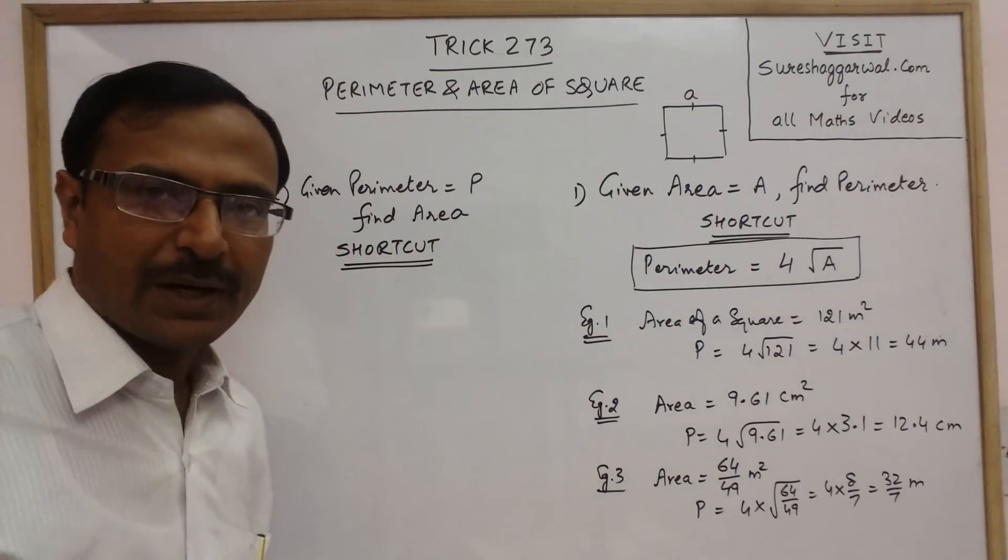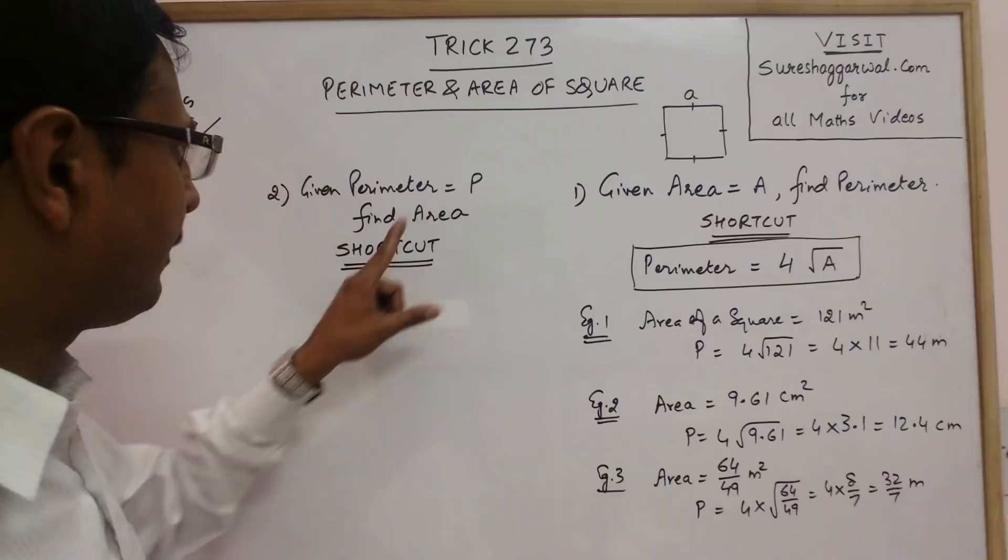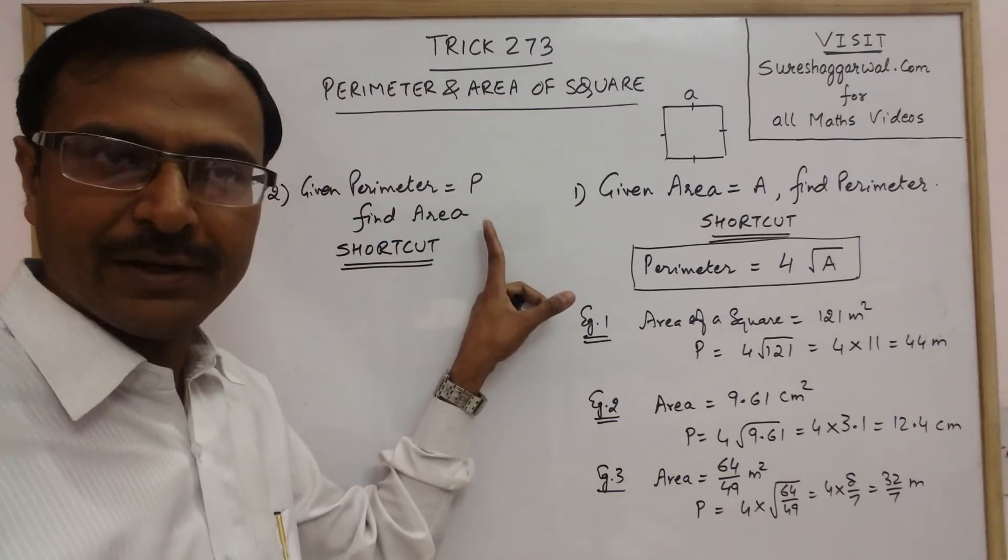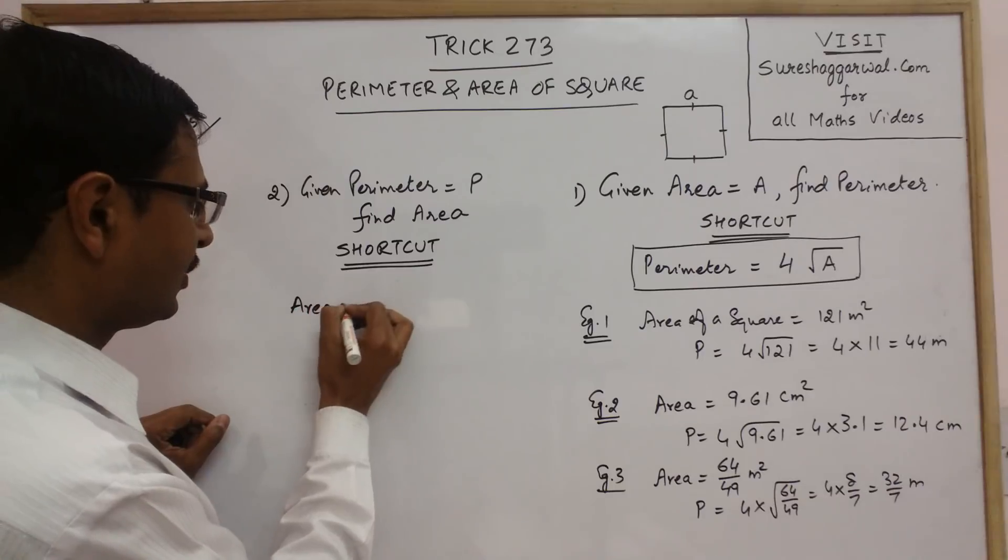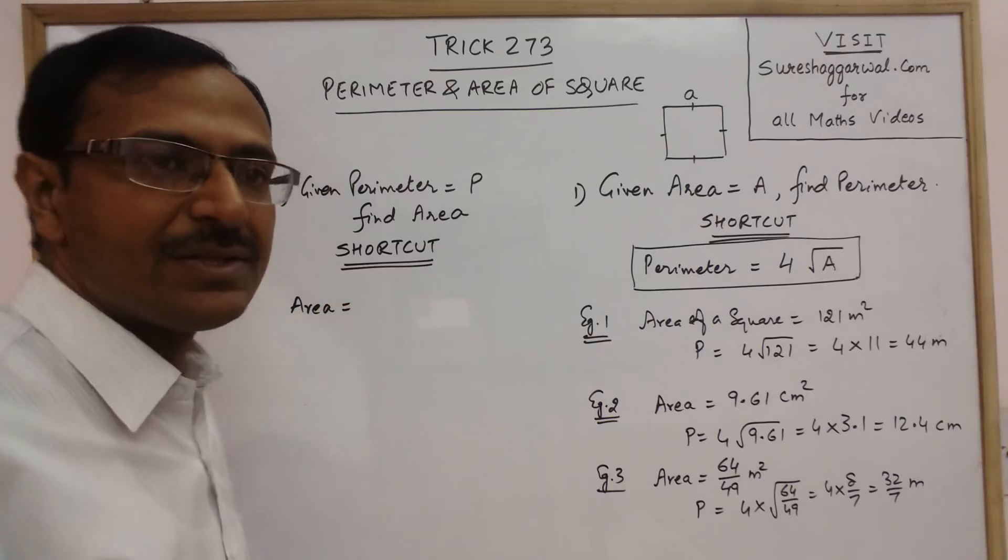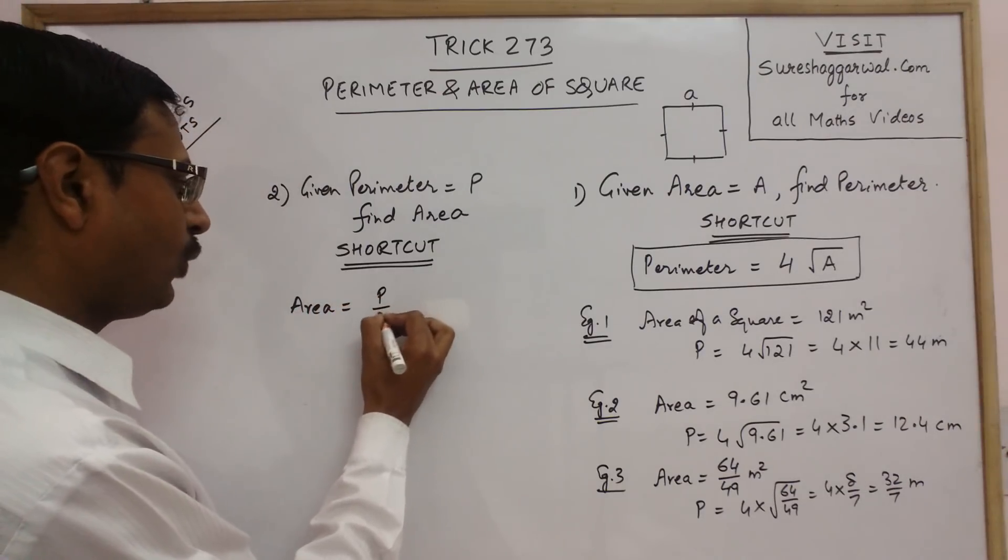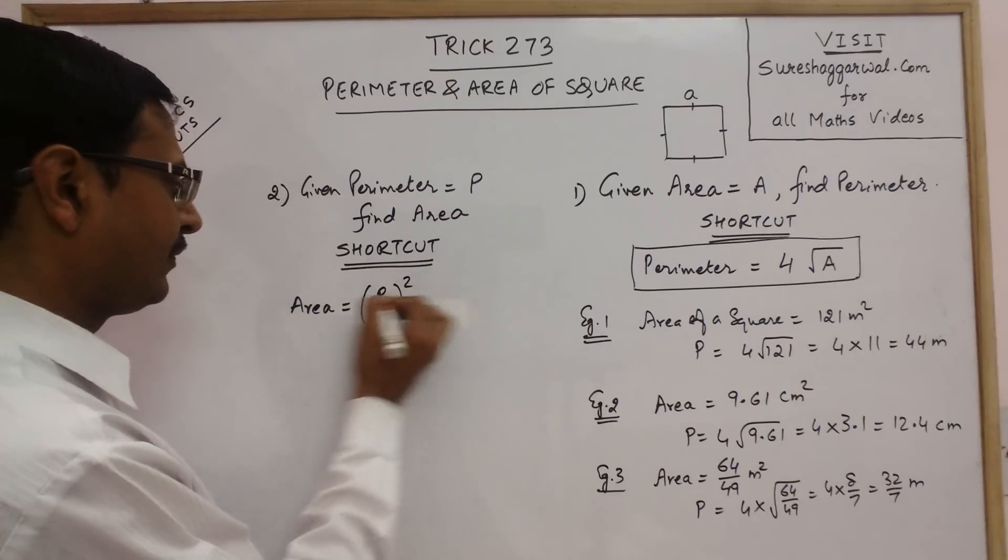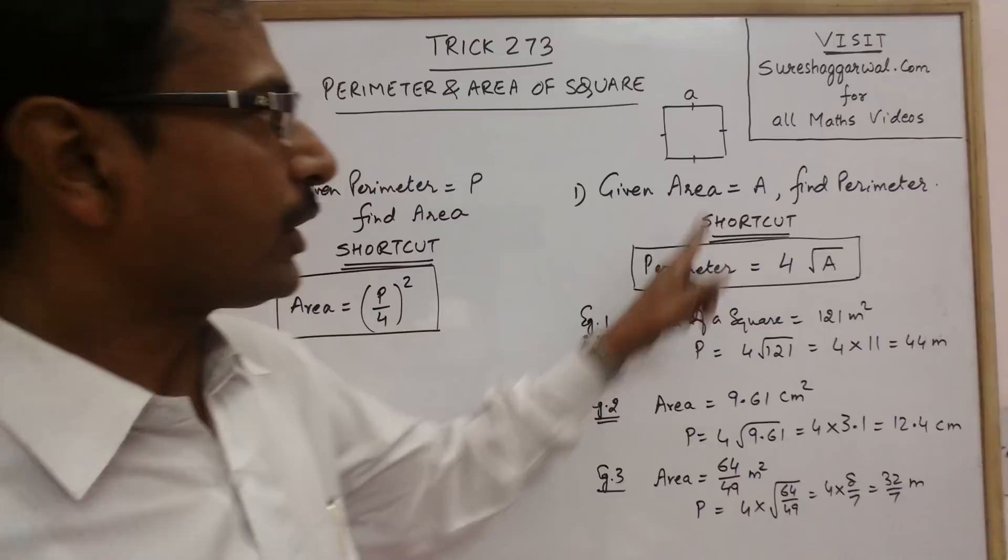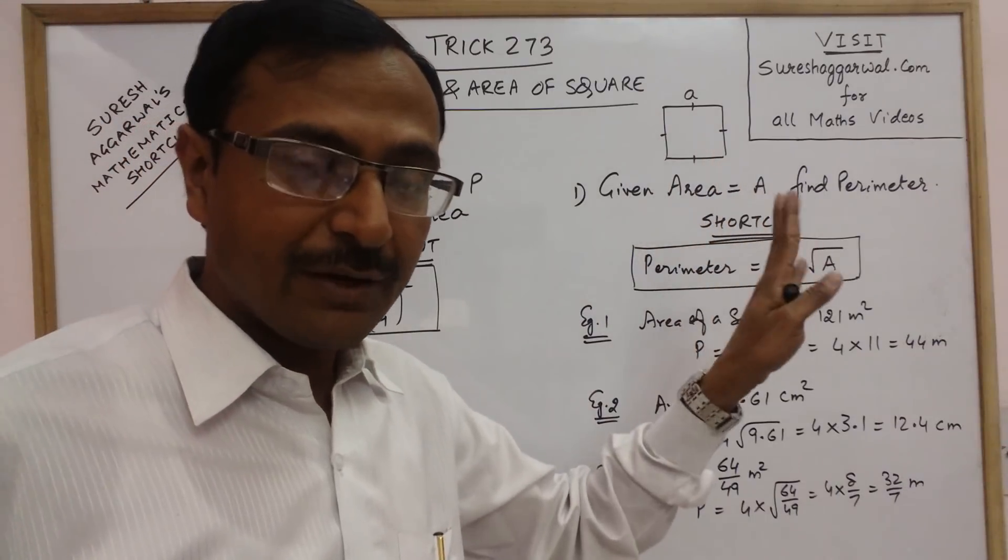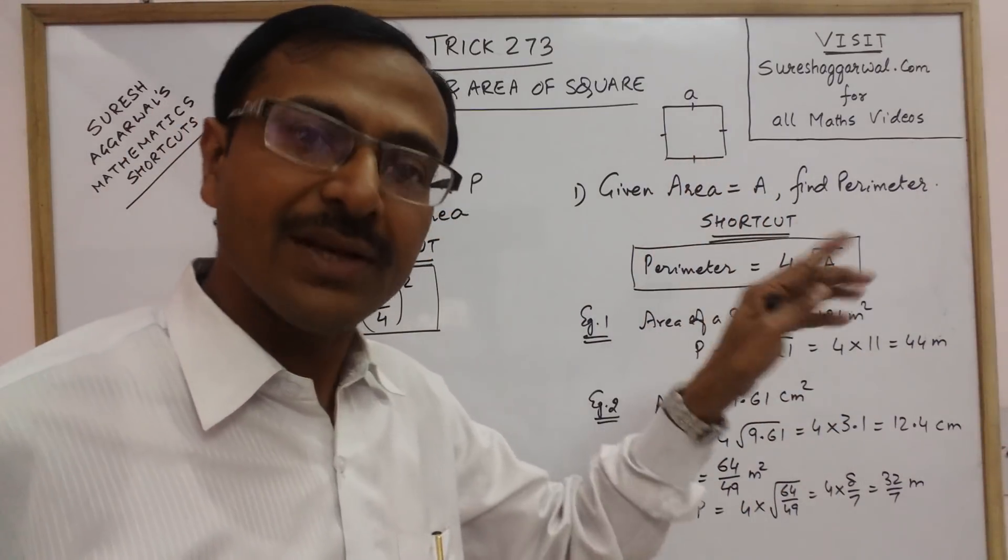Now take the reverse part. We are given the perimeter as P and we need to find the area. So the shortcut for this is to find the area: just divide P by 4 and square it. You will get the area. Remember, I am talking of only a square. It is not valid for all figures, it is valid only for a square.